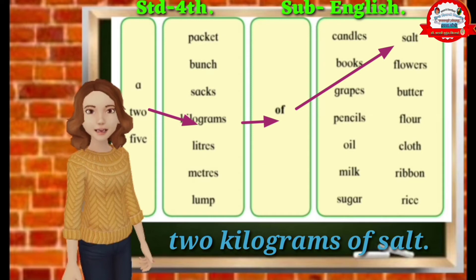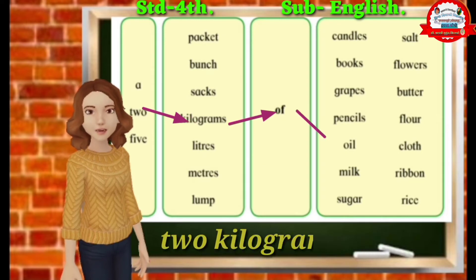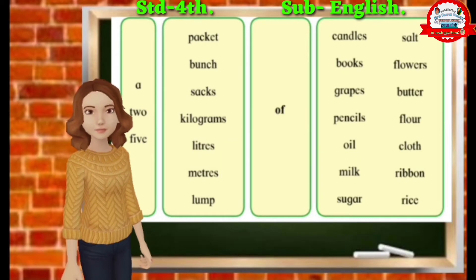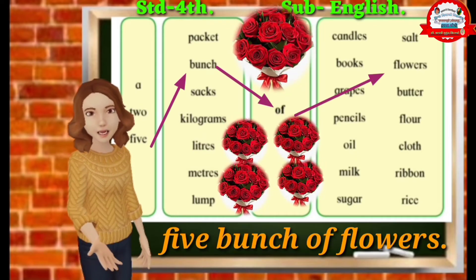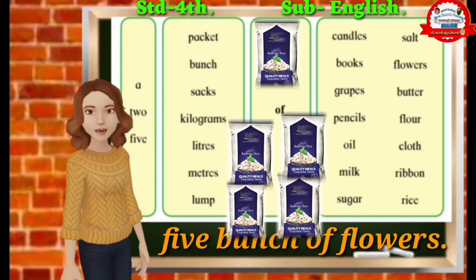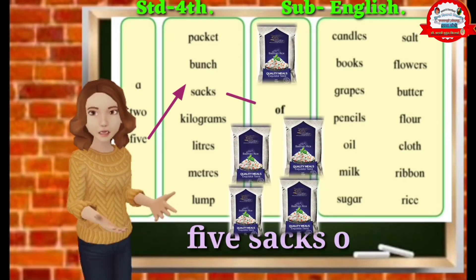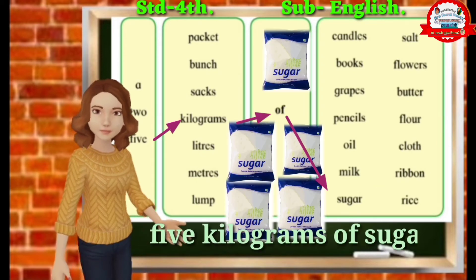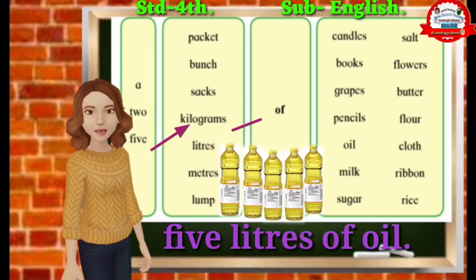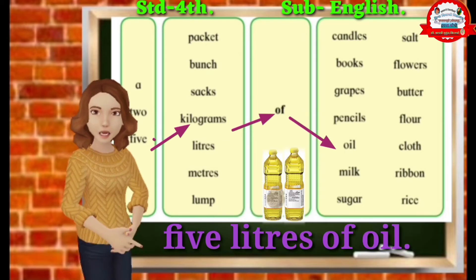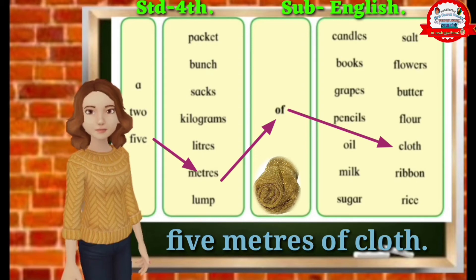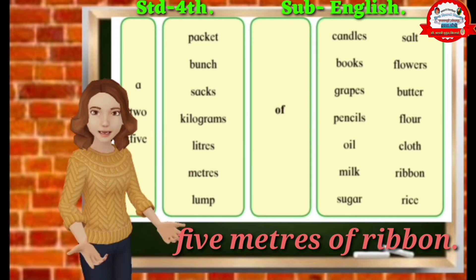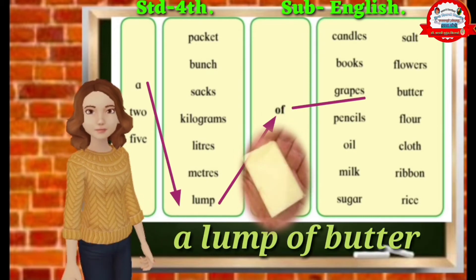Two kilograms of rice, five bunches of flowers, five sacks of rice, five kilograms of sugar, five liters of oil, five meters of cloth, five meters of ribbon, a lump of butter.